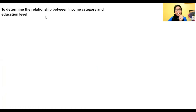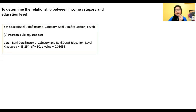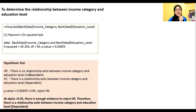Next, we determined the relationship between income category and education level using the chi-square test. The Pearson chi-square test is used for parametric data obtained from the normal Q-Q plot. Chi-square is used to compute for both categorical variables: income category and education level. Using hypothesis testing: H0 states there is no relationship between income category and education level (independent); H1 states there is a relationship (dependent). The p-value obtained is 0.0365, which is less than alpha 0.05, so we reject H0. At alpha 0.05, there is enough evidence to reject H0. Therefore, there is a relationship between income category and education level, meaning they are dependent.